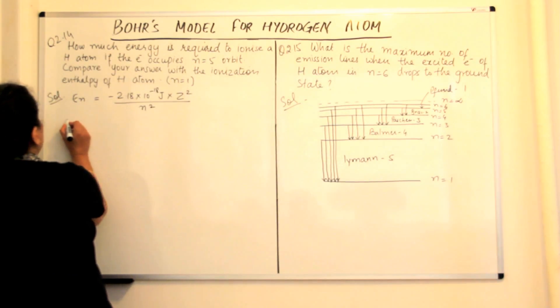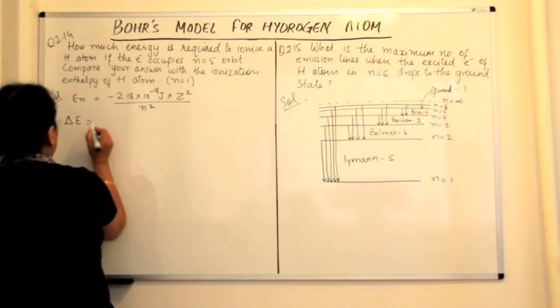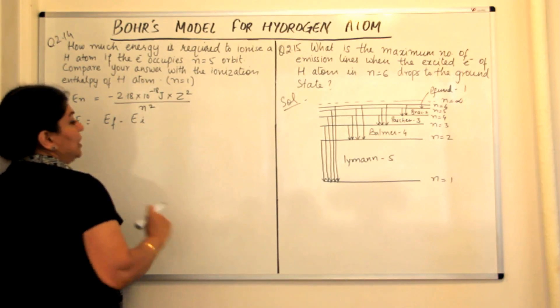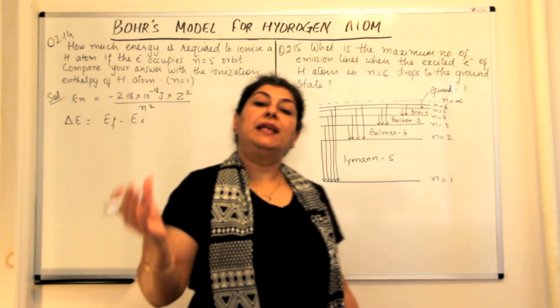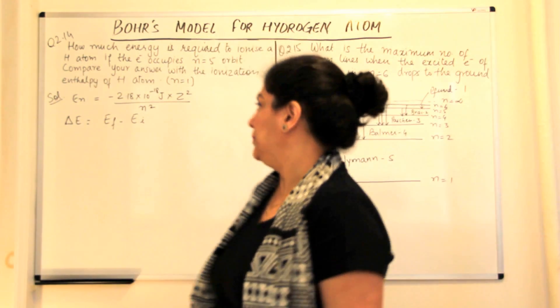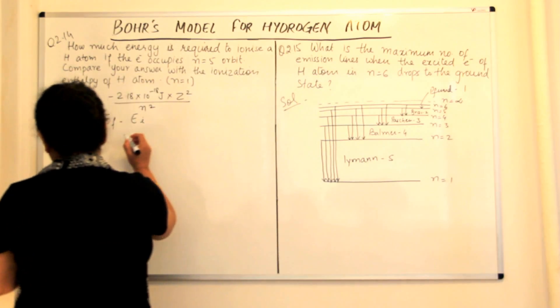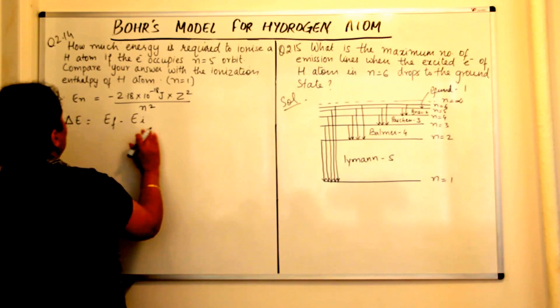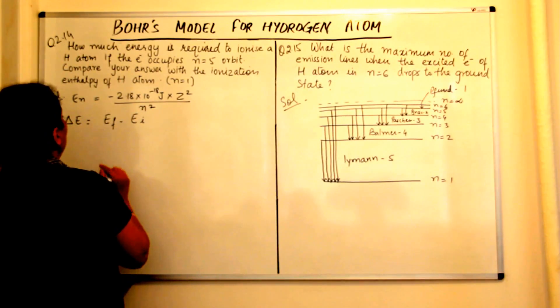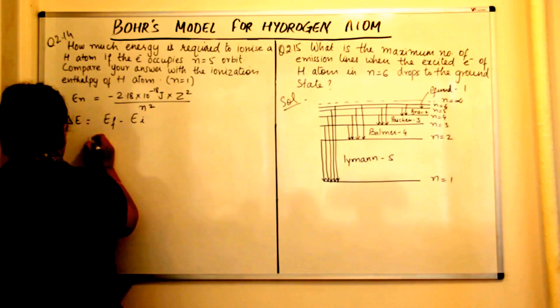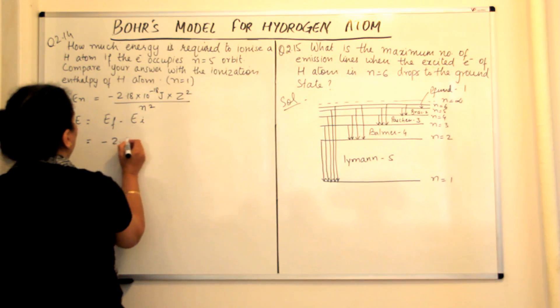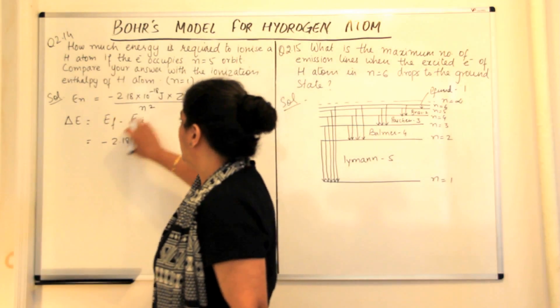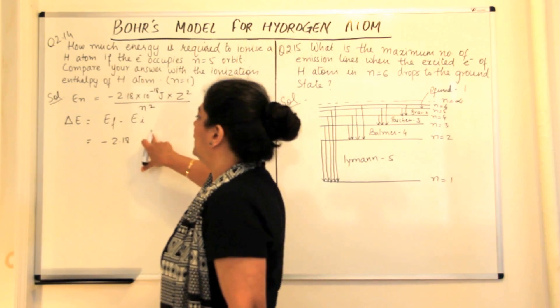So what would delta E be? Delta E would be equal to E final minus E initial, energy of the final shell and energy of the initial shell. The electron is moving from the fifth shell to infinity. Therefore this would be equal to minus 2.18. Now we are substituting the values in this formula for both the energies.